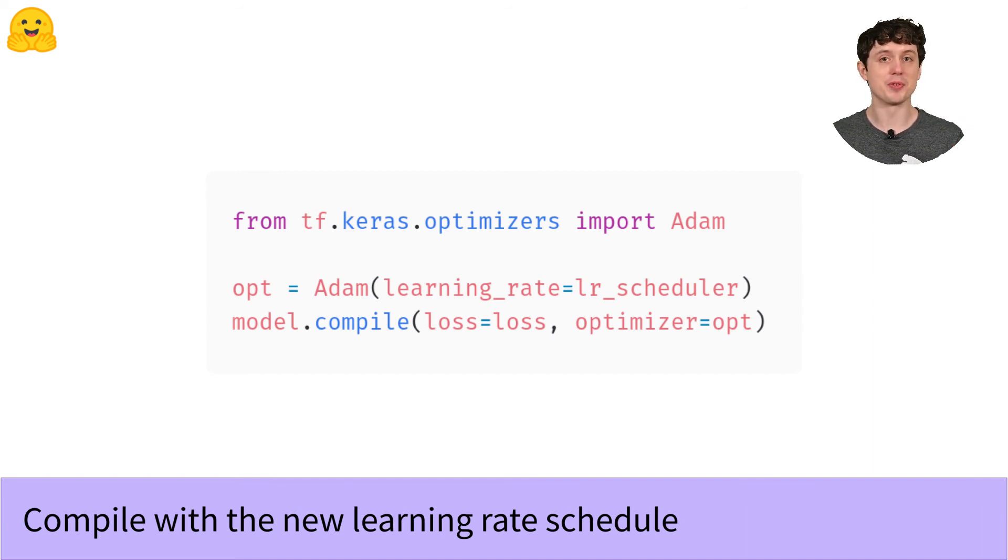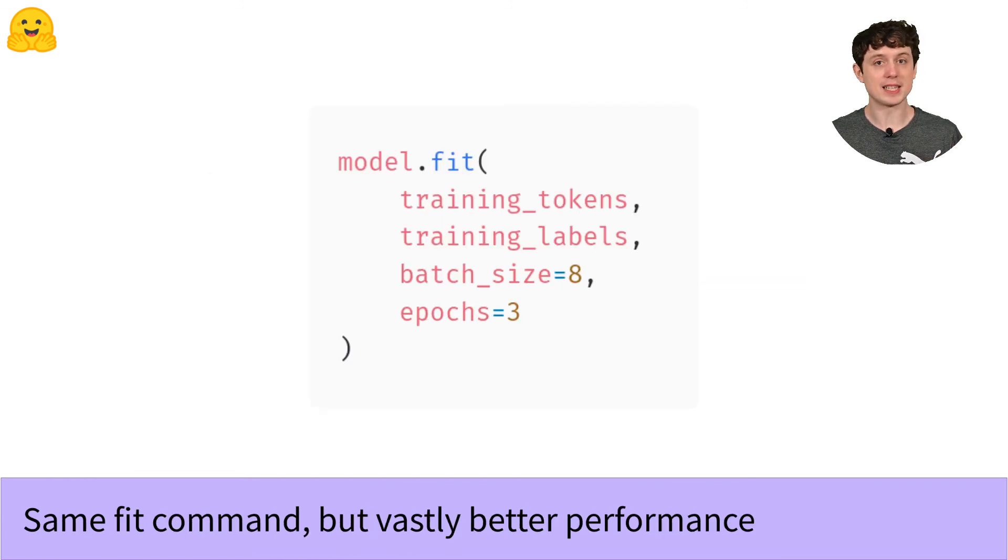So now we have a high-performance model ready to go. All that remains is to fit the model just like we did before. And remember, because we've compiled the model with the new optimizer and the new learning rate, we actually don't need to change anything about the fit call at all. We just call fit here exactly the same command we used before.